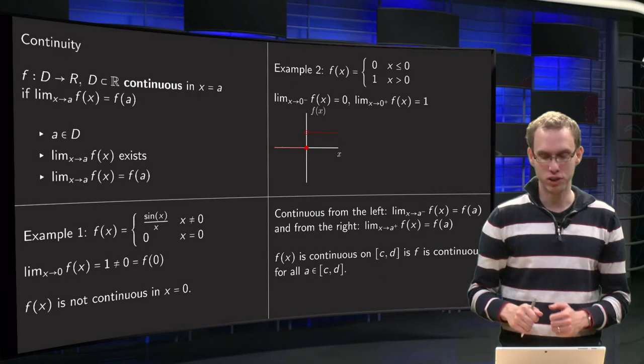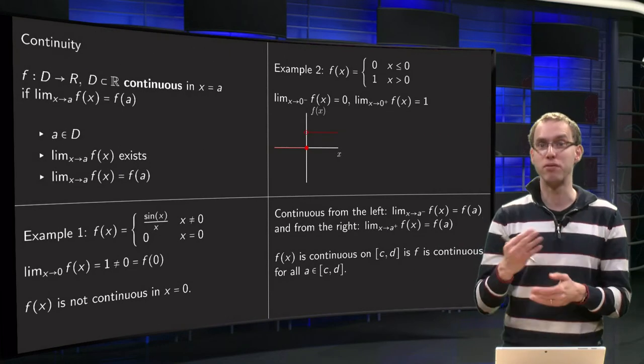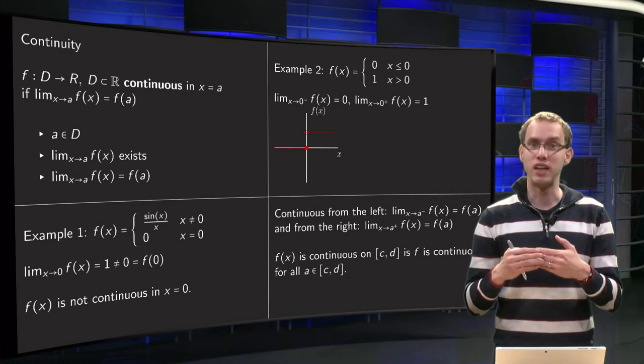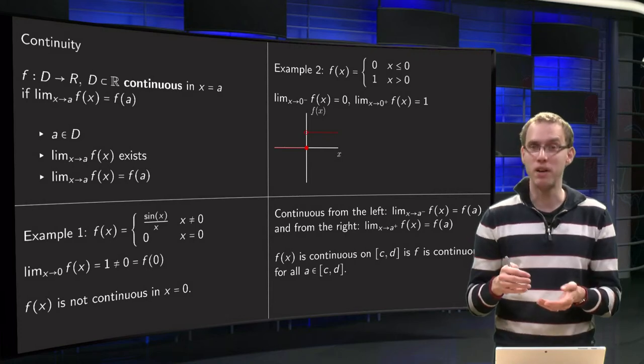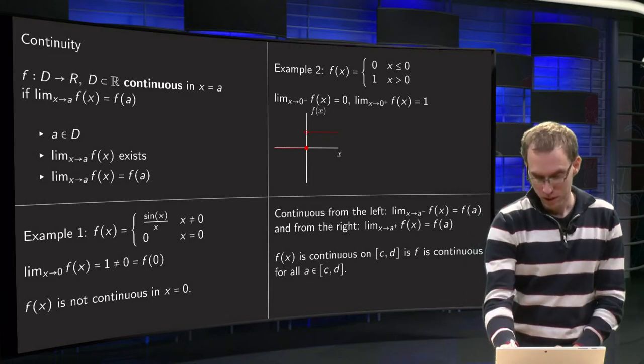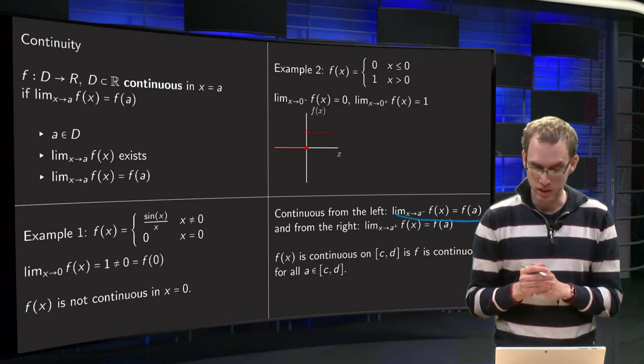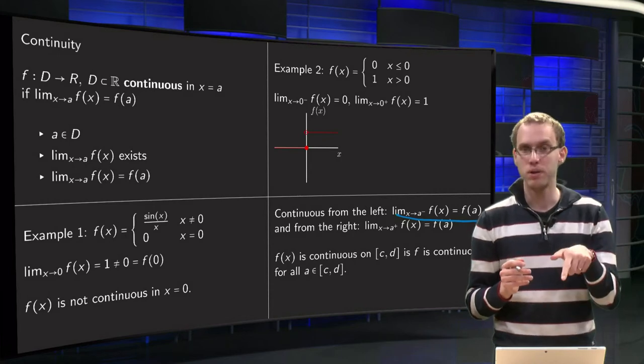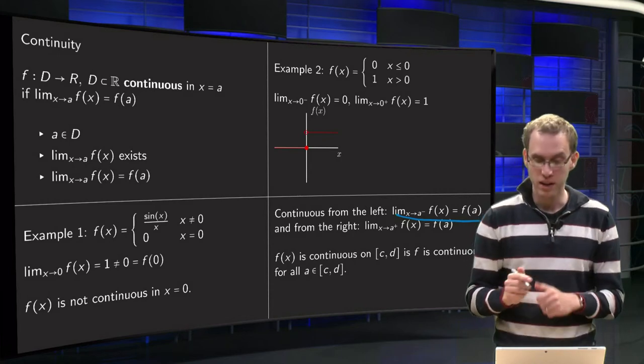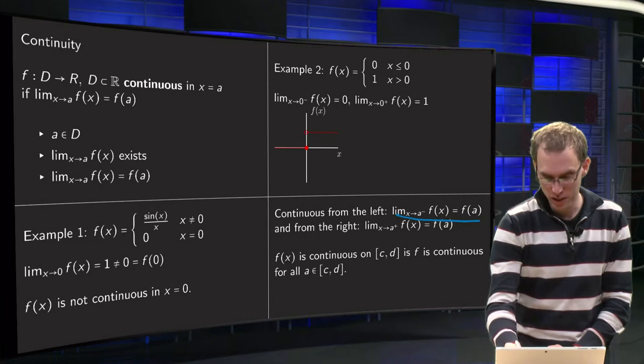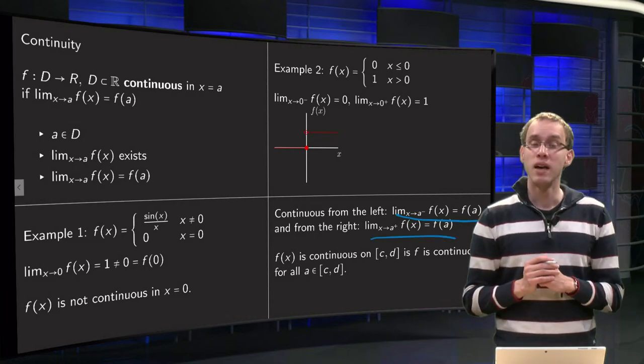And then finally the notions of continuous from the left and from the right. A function is said to be continuous from the left if lim(x→a⁻) f(x) = f(a), and from the right if you come from the other side, lim(x→a⁺) f(x) = f(a).